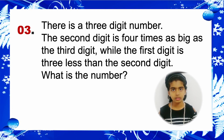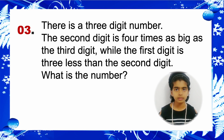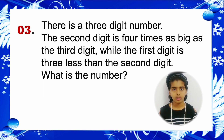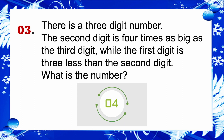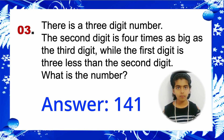Riddle 3: There is a three-digit number. The second digit is four times as big as the third digit, while the first digit is three less than the second digit. What is the number? Answer: 141.